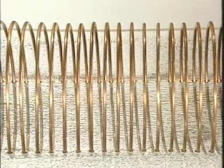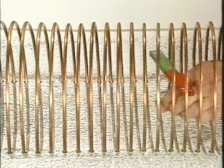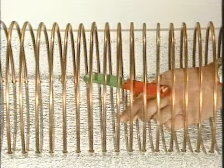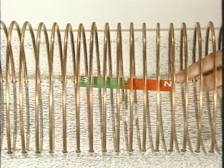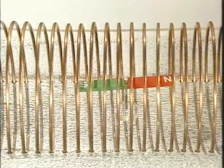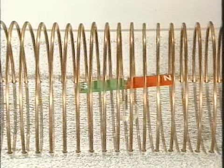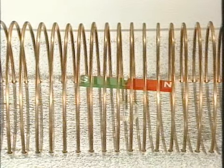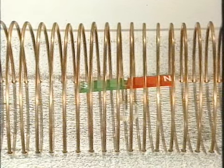Ich bringe nun, um das Magnetfeld mit seiner Richtungsorientierung zu prüfen, einen Stabmagneten in das Innere herein. Der Nordpol richtet sich sofort nach rechts aus und zeigt, dass die Feldlinien im Spuleninneren nach rechts gerichtet sind.